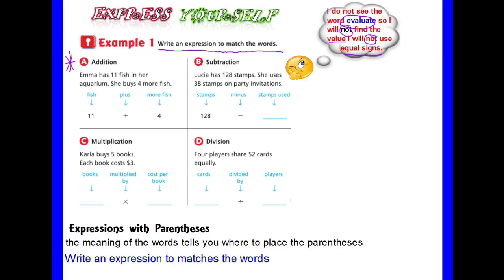Let's start with addition. Emma has 11 fish in her aquarium. So that's the total number of fish she started with, 11. She buys 4 more. When we buy something we add to what we already have. And then 4 more fish is what she bought. 11 plus 4.